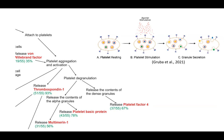Thrombospondin-1 is known to be a biomarker for platelet activation. It is also a major activator for TGF-beta-1, which is a cytokine that plays a key role in regulating the immune response. The dysregulation of TGF-beta is known to be associated with rheumatoid arthritis in the context of Lyme disease.